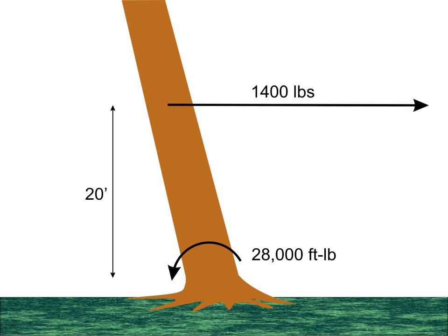Assuming we had a rope attached 20 feet up the tree, we would need a horizontal pull of over 1,400 pounds to pull the tree over in the direction we wanted to. Clearly, four big guys on four ropes are not going to be able to do that.